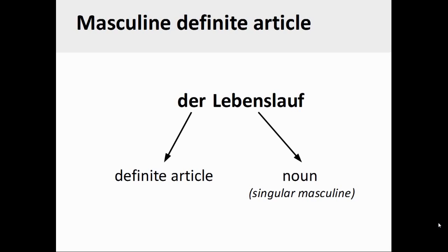Let's take a look at some examples. The German noun Lebenslauf, or resume, is a singular masculine noun. Therefore, its definite article will always be der.